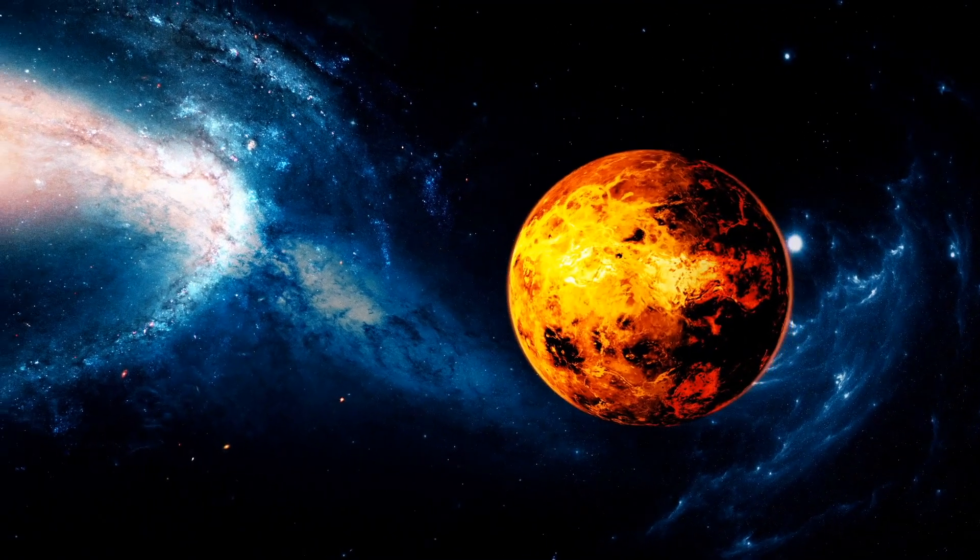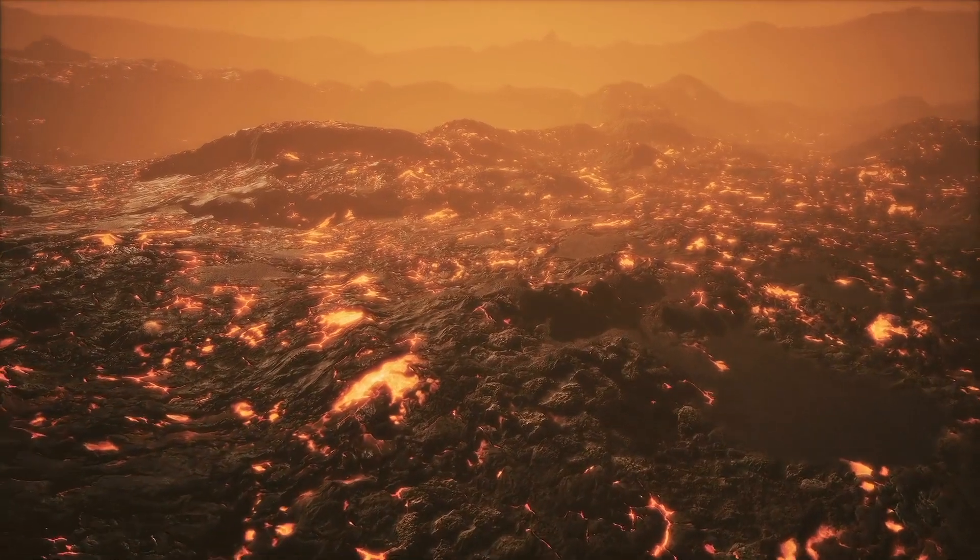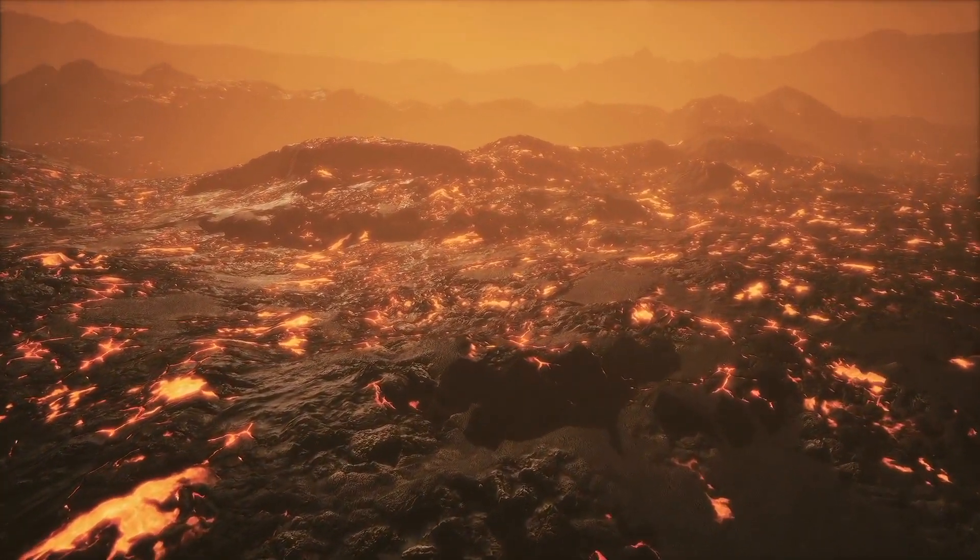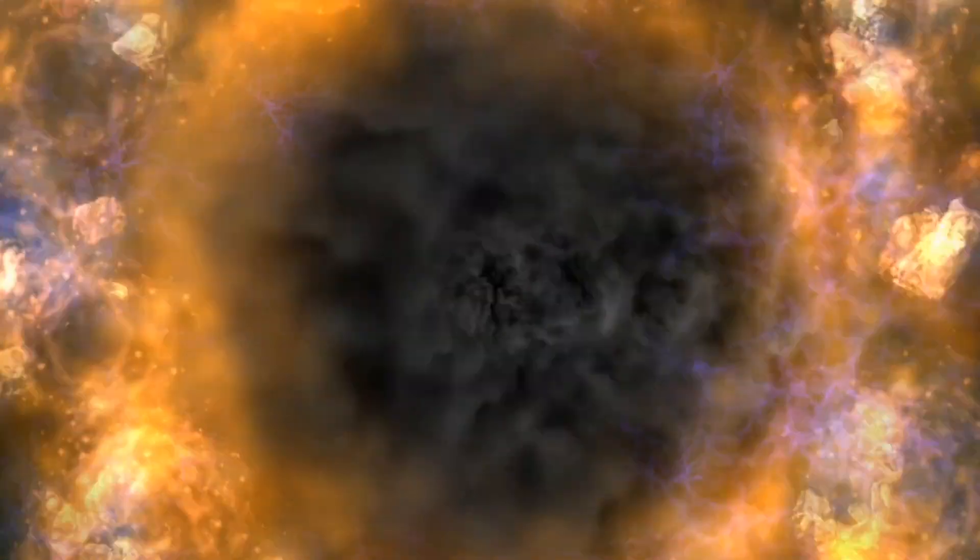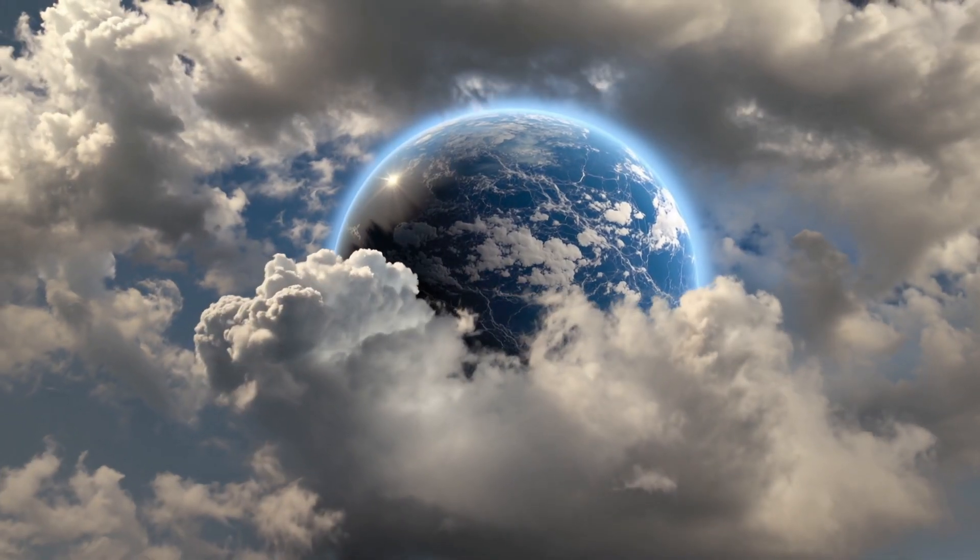Venus is the hottest planet in our solar system, reaching surface temperatures of a blistering 867 degrees Fahrenheit. Its thick atmosphere traps in heat and gases. It's like a global warming nightmare.